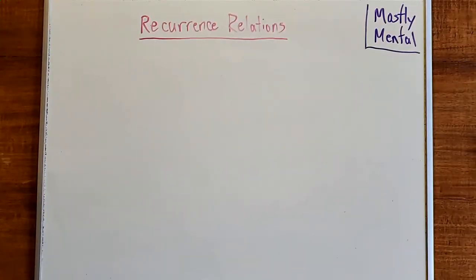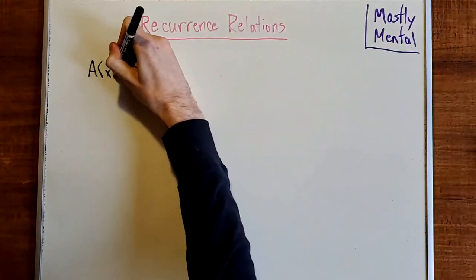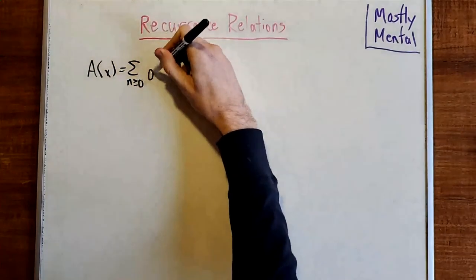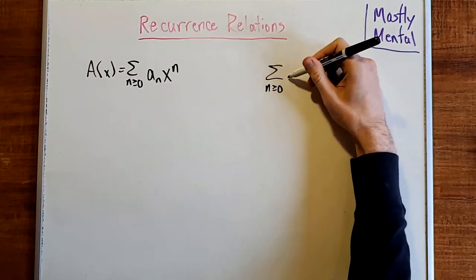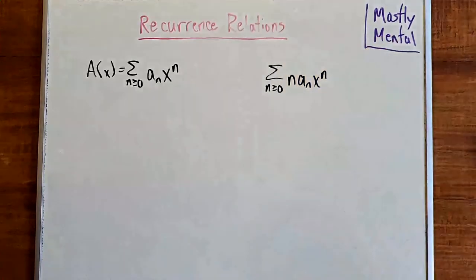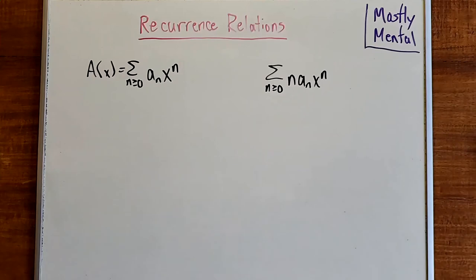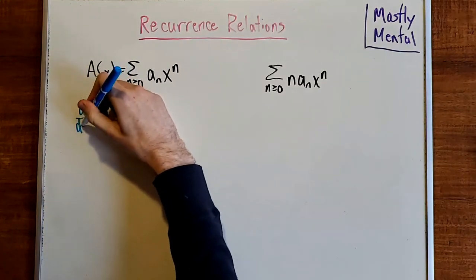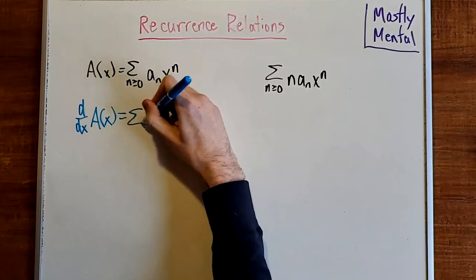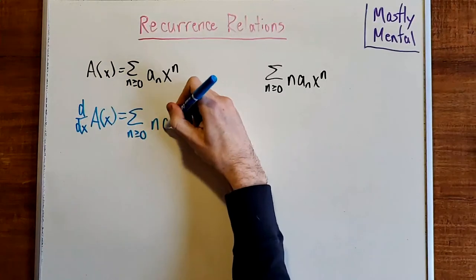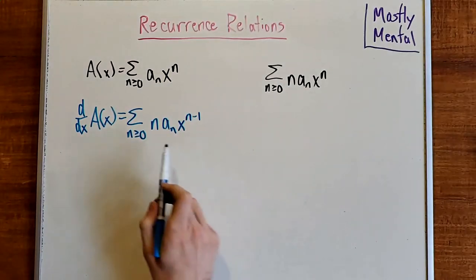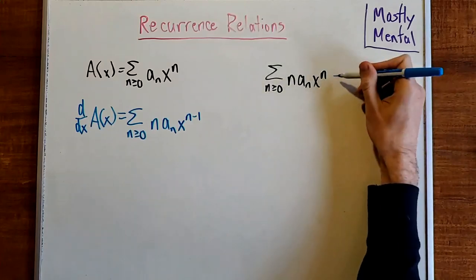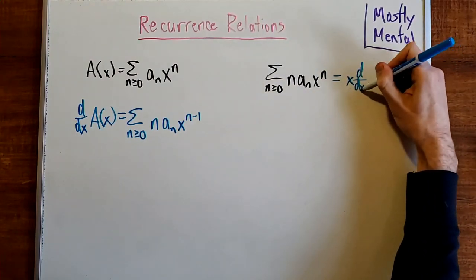For our last example, we'll need to know one additional trick. Given that A(x) is once again the sum for n greater than or equal to 0 of a_n x^n, how can we express the sum for n greater than or equal to 0 of n times a_n x^n? Well, if you know your calculus, that might look a bit familiar. It looks an awful lot like a derivative. If we take the derivative here, we get d/dx of A(x) is going to be the sum for n greater than or equal to 0 of n times a_n times x^{n-1}. And so if we multiply this through by x, we get this sum. So this is going to be x times the derivative of A(x).